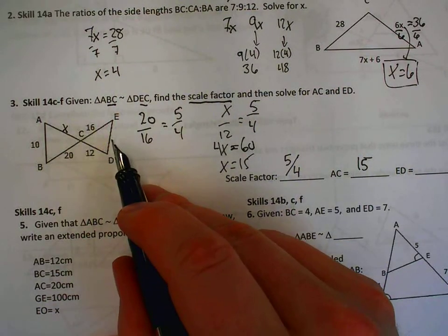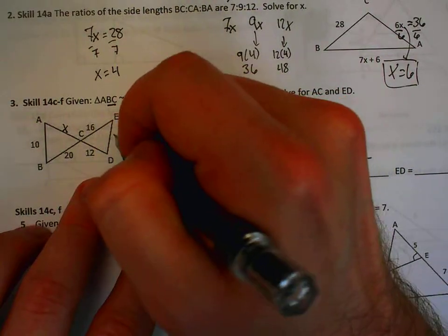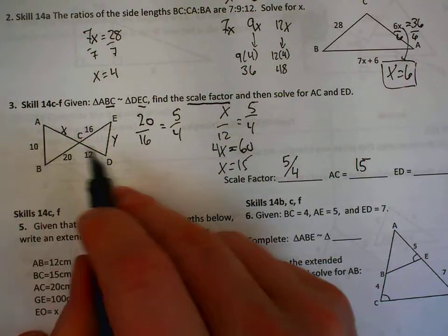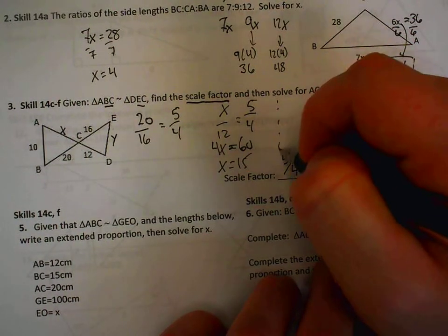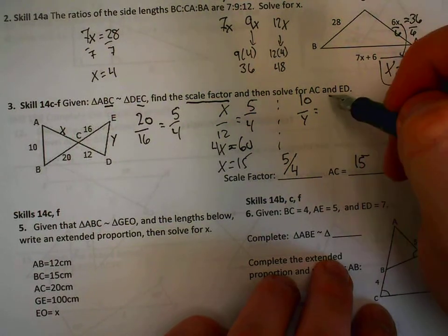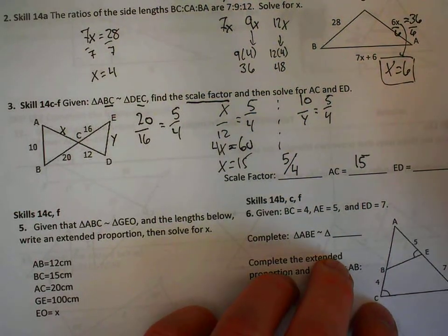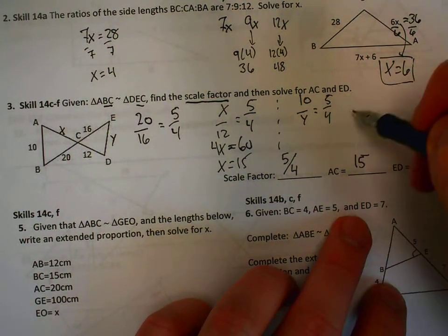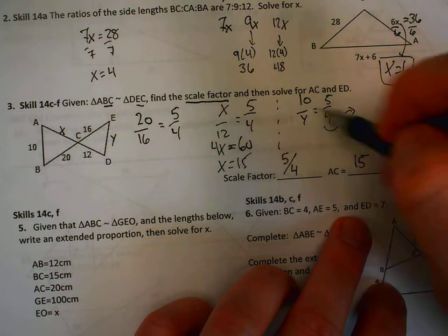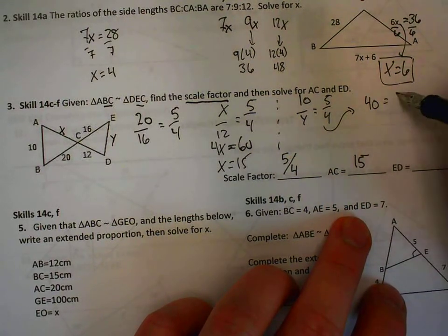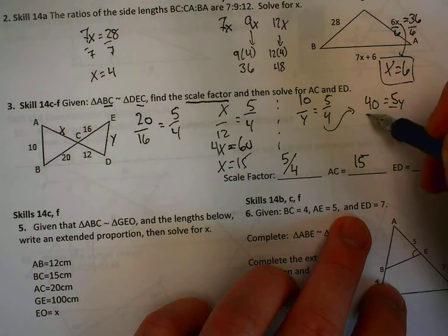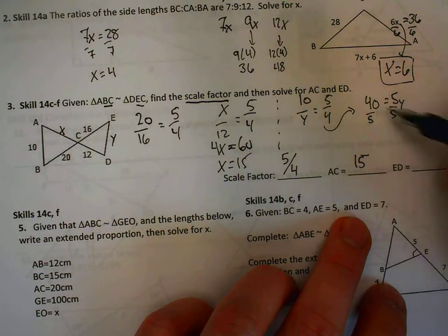To find the other missing side, there's only one we haven't played around with. So here, my ratio would be 10 over y equals 5 over 4. Just like last time, cross multiply. So 4 times 10 would be 40. Divide by 5 on both sides and get 8.